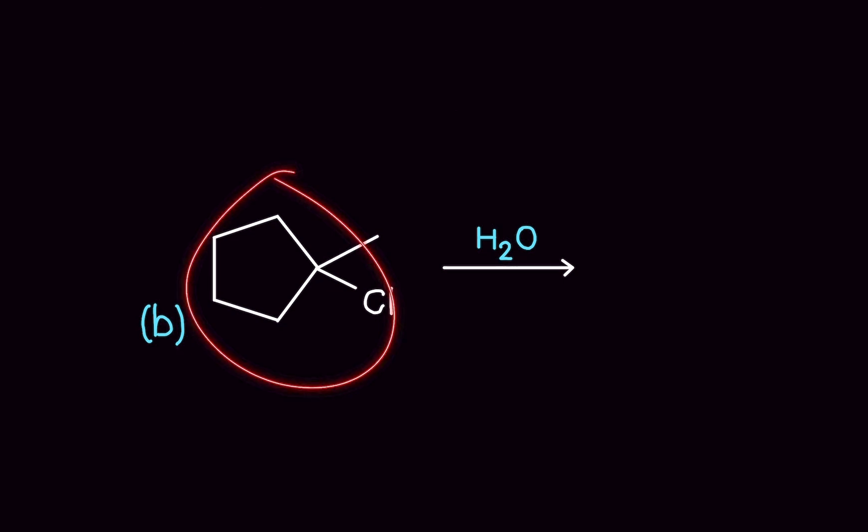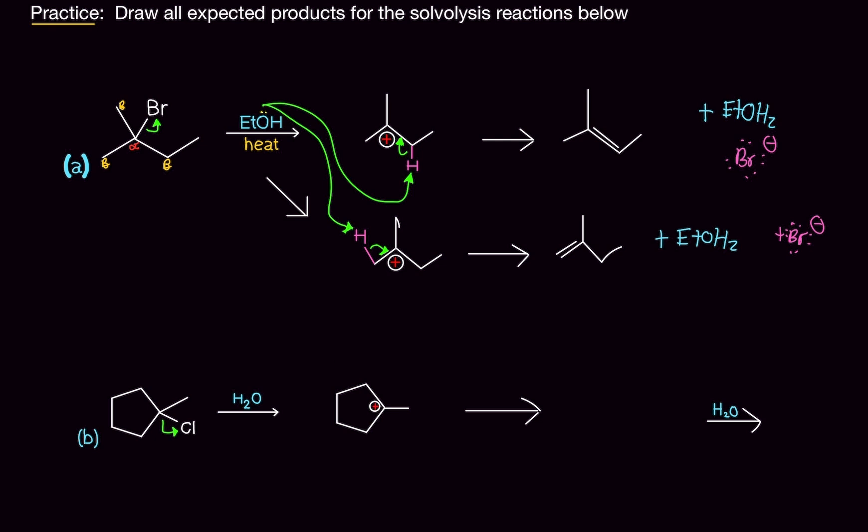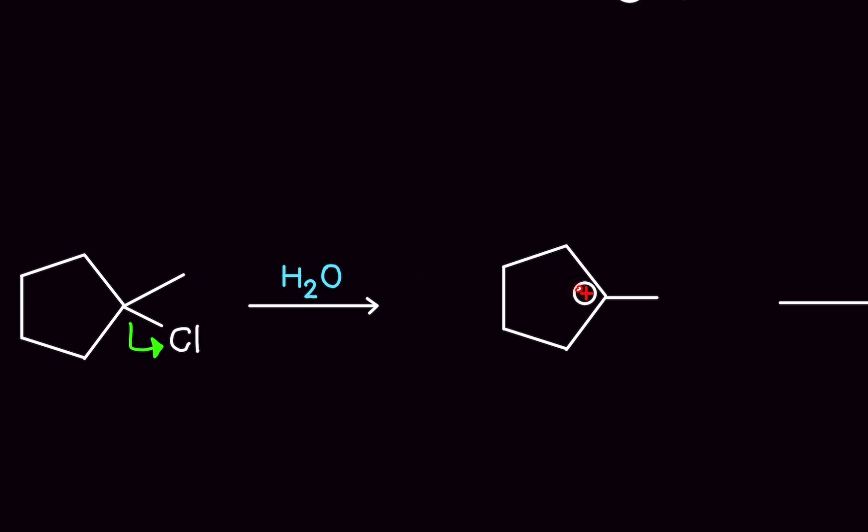About this one. So we have this alkyl halide and we have water. We have no heat added. So this is going to be an SN1 reaction. So let's do it. First step. Leaving group leaves. Always, always, always in SN1 E1. Leaving group leaves. We are left a carbocation here. Because this bond has now gone away. This carbon is missing the bond now. So we have now a positive ion. A carbocation.